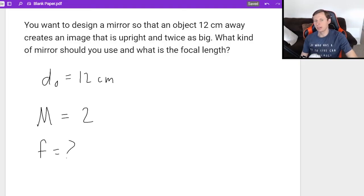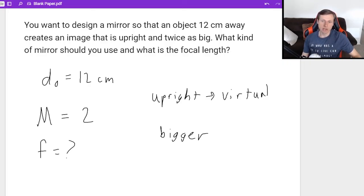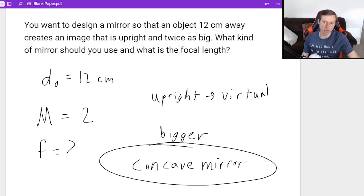So first, we're going to find the kind of mirror that we want. Because you'll notice, if we want to produce an image that's upright, which really means virtual, and it's bigger, then there's only one mirror that can create virtual images that are also bigger, it is going to be the concave mirror. So I know for a fact, it's got to be the concave mirror, because I want a bigger and virtual image, only the concave mirror can do that.